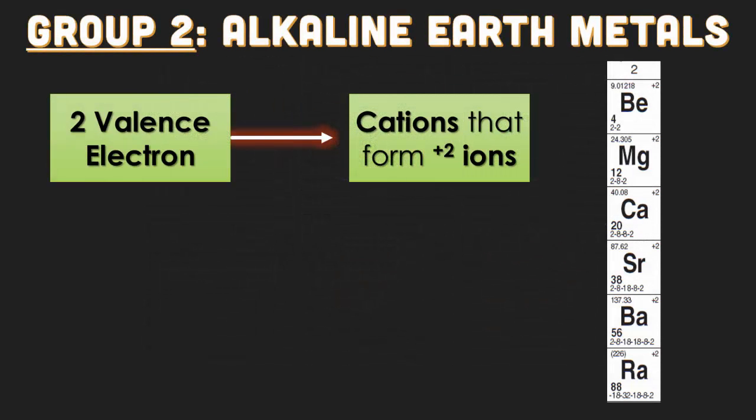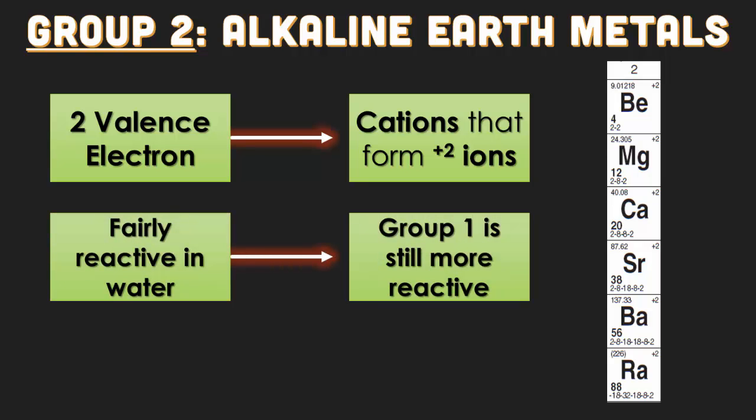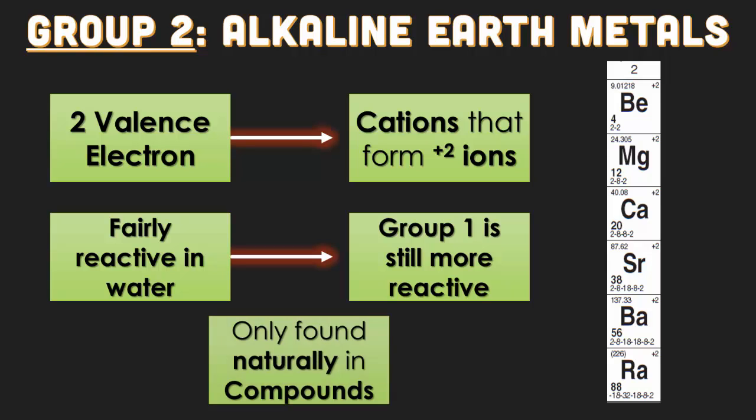Group 2 is the alkaline earth metals. In the last video, we said they're a little less reactive than group 1, but they almost mimic group 1 — that's why they have a similar group name. They have two valence electrons, which means they form positive two cations, losing two electrons. They're fairly reactive in water, just a little less reactive than group 1. They're only found naturally in compounds, and they're called alkaline earth because we find most of them in the earth's crust. You can also find a lot of these in our bodies — magnesium is found commonly in plants, and calcium is found commonly in our bones.